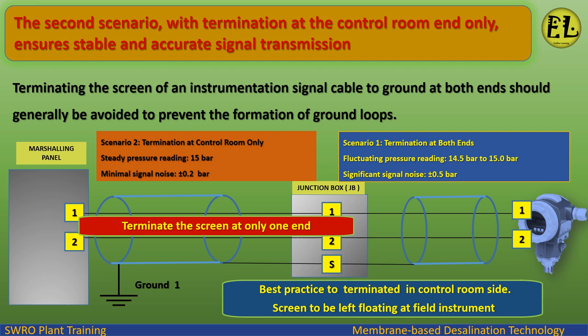Termination at both ends results in a fluctuating pressure reading ranging from 14.5 bar to 15.0 bar, with significant signal noise of plus or minus 0.5 bar.